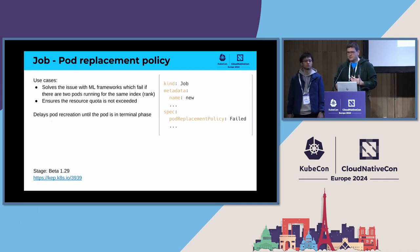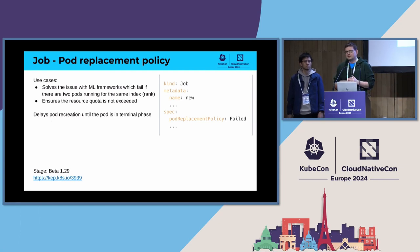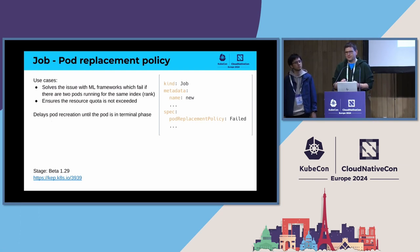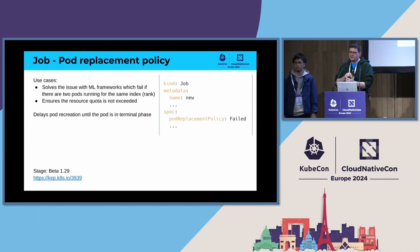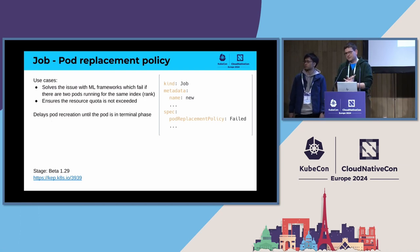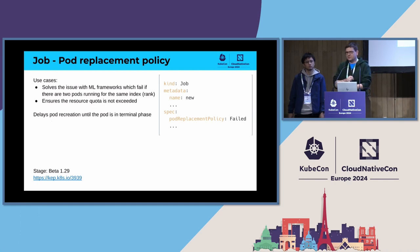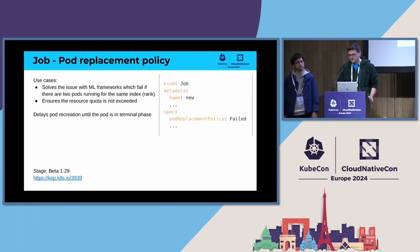The next feature is job replacement policy. With this feature, we introduce a new spec field, pod replacement policy, that you can set to 'fail', delaying recreation of a pod until the failing pod reaches the terminal phase of failed. This is important for AI training jobs using frameworks like TensorFlow or JAX, which require at most one pod running at the same time. Without this, a terminating pod and a newly created pod could overlap for around 30 seconds, making these frameworks crash. It also matters for resource management, since recreating a pod before the previous one is fully terminated may exceed quota.